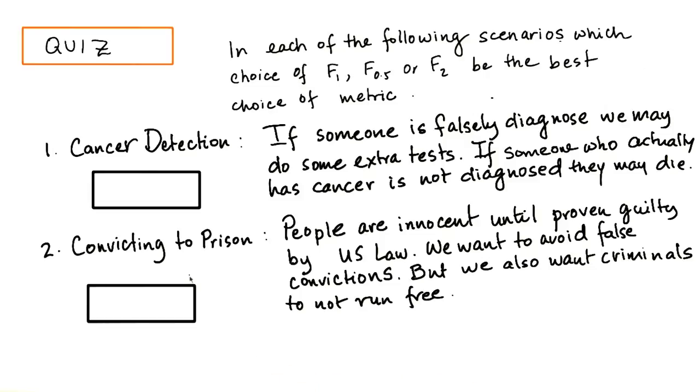The second example is convicting to prison. People are innocent until proven guilty by US law. We want to avoid false convictions, but we also want criminals to not run free. In this case, what sort of F score will we use?